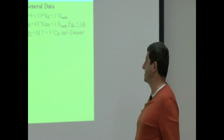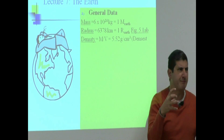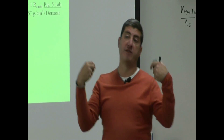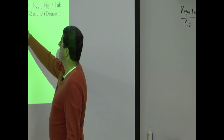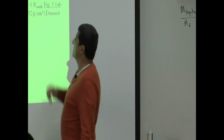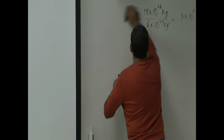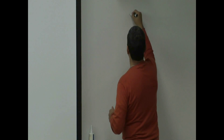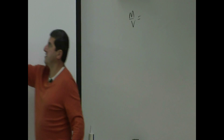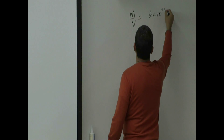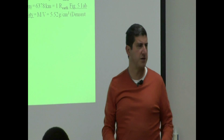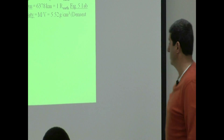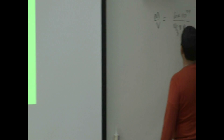The next property is density. Density measures how compact something is — how much mass it has relative to how much volume it occupies. It's the ratio of mass to volume. To calculate it, you take the mass of the Earth — 6 times 10 to the 24th kilograms — and divide by its volume. The volume of a sphere is 4/3 pi r cubed.